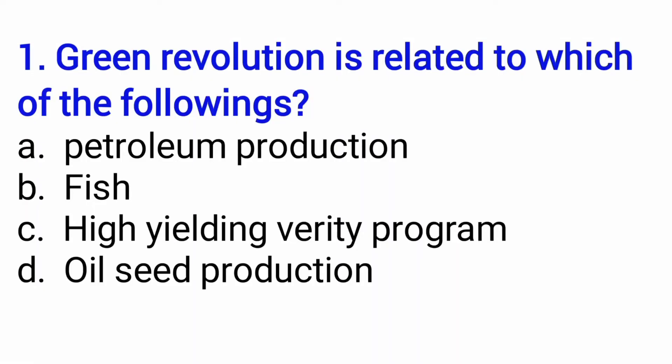Our first question is: the green revolution is related to which of the following? Is it petroleum production, fish high-yielding variety program, or oil seed production? The right answer for this particular question is high-yielding variety program. Basically, green revolution is a high-yielding variety program. It has been developed with high-yielding variety seeds so that production can improve. So, the answer is C.